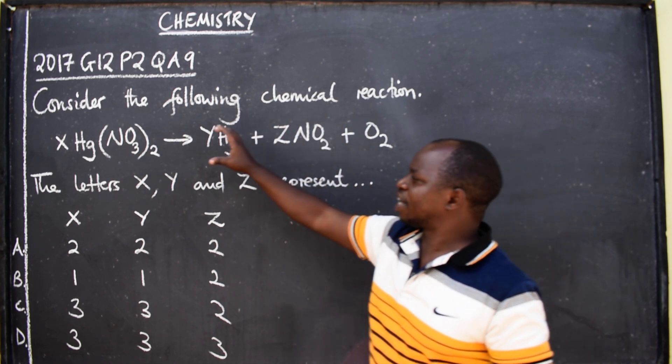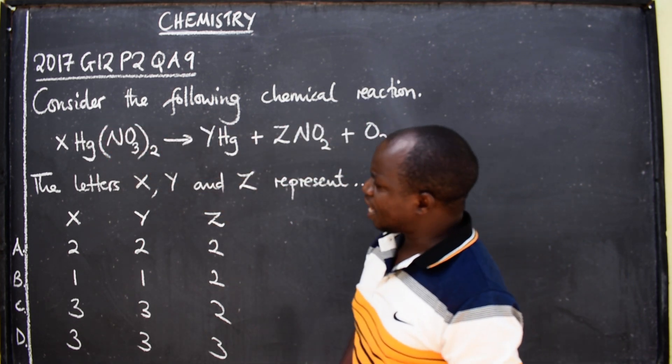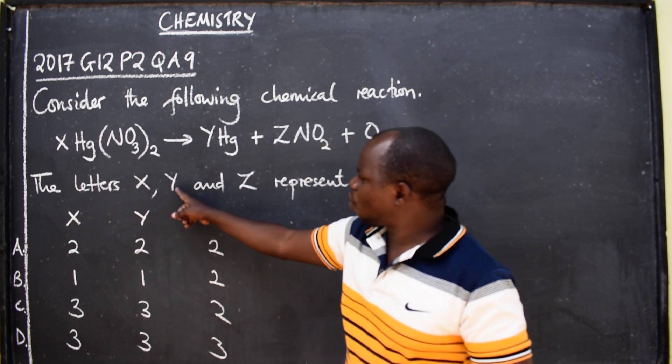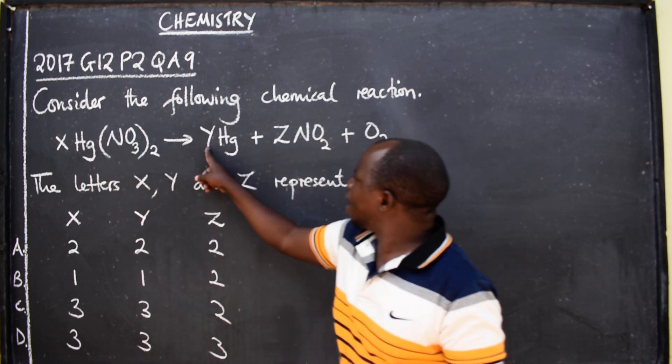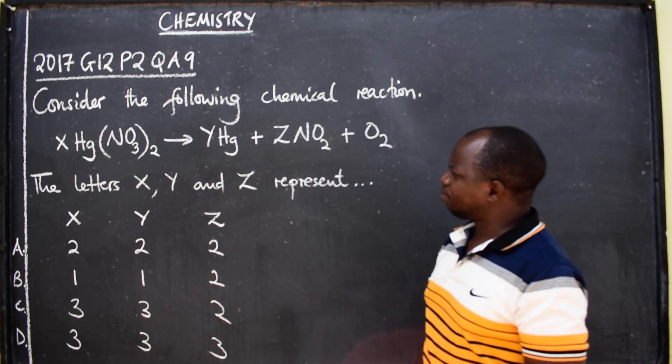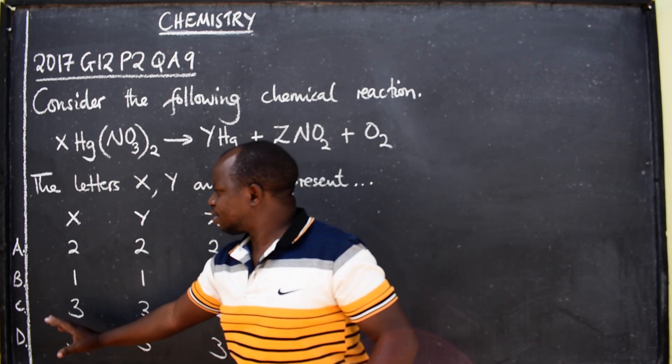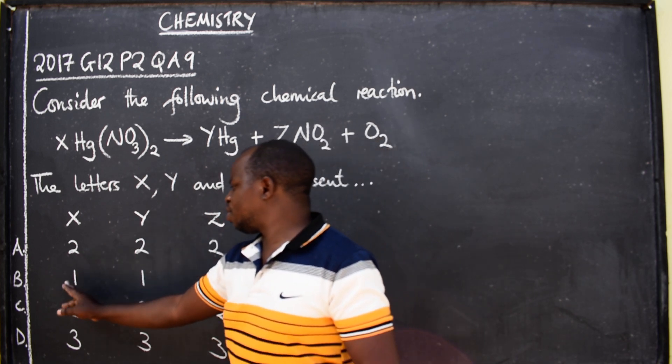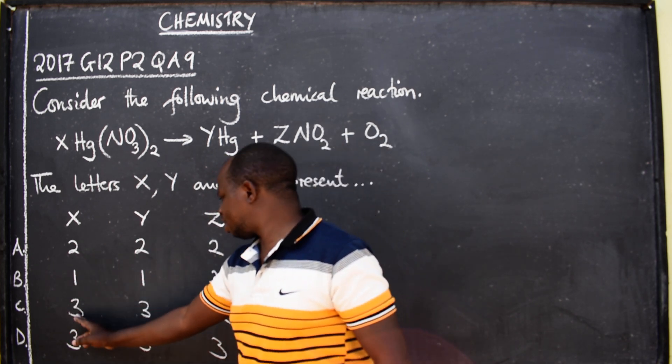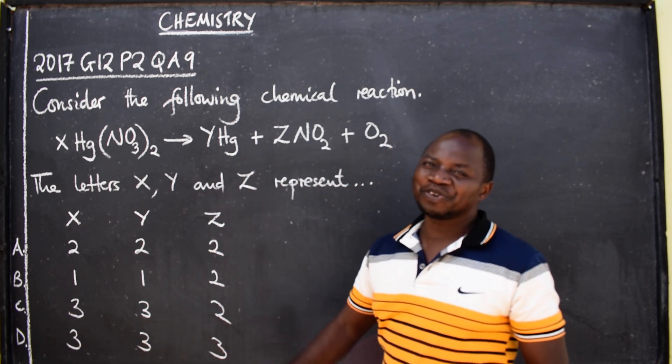Consider the following chemical reaction. The letters X, Y, and Z represent coefficients. Options were provided: X, Y, Z - option A: 2, 2, 2; B: 1, 1, 2; C: 3, 3, 2; D: 3, 3, 3. Which one do you think is the correct option?